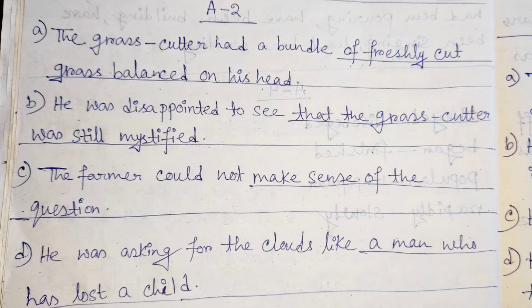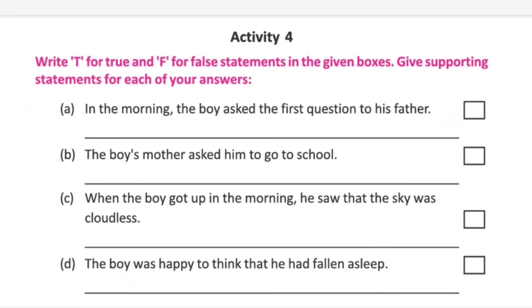Activity 4: Write T for True and F for False statements in the given boxes, and give supporting statements for each of your answers.